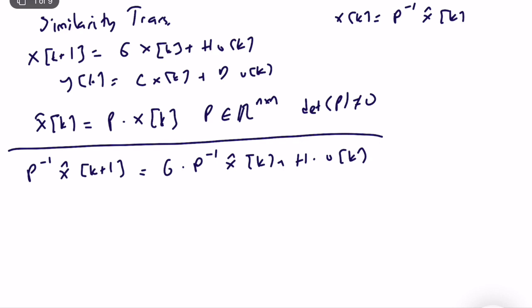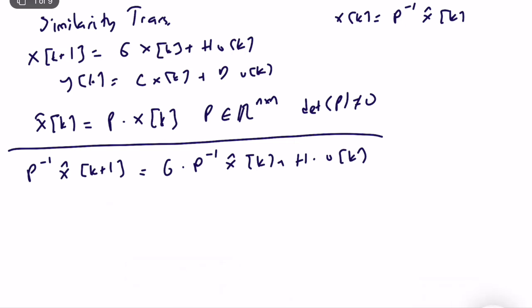Since P is an invertible matrix, we can multiply both sides by P from the left. So x̂(k+1) is equal to P·G·P⁻¹·x̂(k) plus P·H·u(k). That gives us the new state evolution equation.